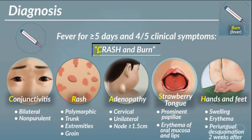The most commonly utilized mnemonic is CRASH: Conjunctivitis, Rash, Adenopathy, Strawberry tongue, Hands and feet. Conjunctivitis is bilateral and non-purulent. Rash is polymorphic, more commonly seen on trunk and extremities, occasionally in the groin. Adenopathy is cervical, unilateral, tender, and lymph nodes are more than 1.5 cm. Strawberry tongue is associated with involvement of pharynx and oral mucosa. Hand and feet show edema, erythema, and desquamation.